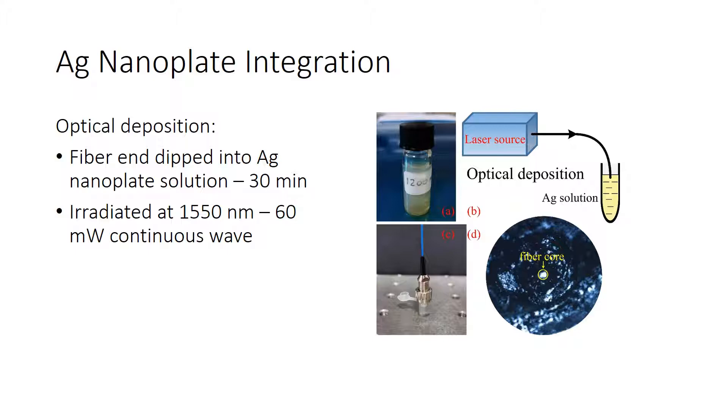Silver nanoplates can be integrated into an optical fiber by optical deposition. This is a process in which a fiber end is dipped into a silver nanoplates solution for 30 minutes and irradiated with a continuous wave laser at 1550 nanometers with a power of 60 milliwatts.